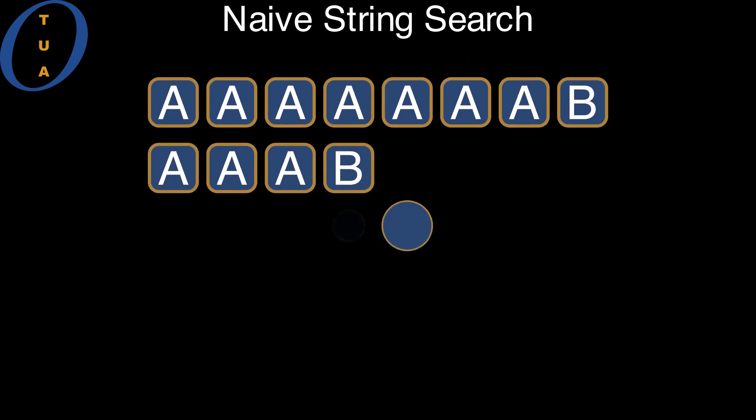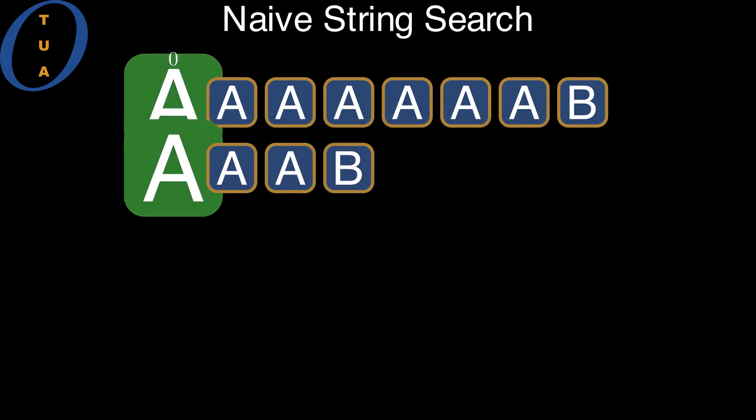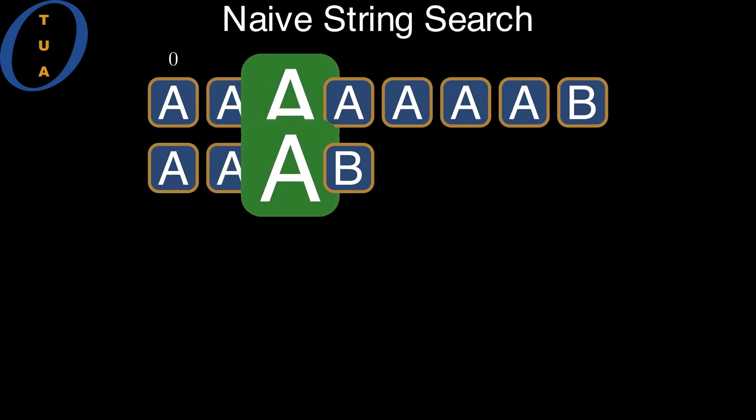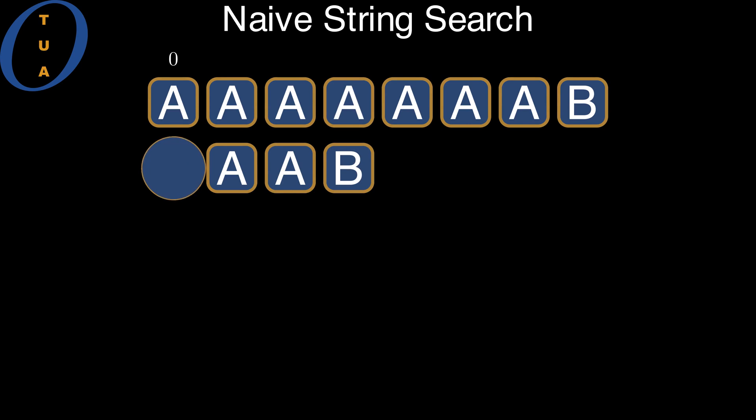Each token represents one comparison, which takes constant time. With the pattern at offset zero, the algorithm compares all symbols in the pattern against the corresponding symbols in the text and only fails at the very last one. We add one token for each comparison made by the algorithm.